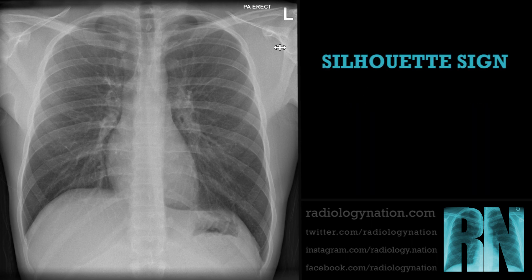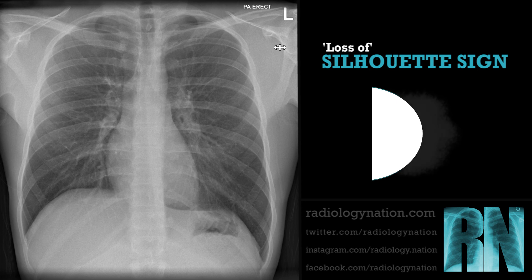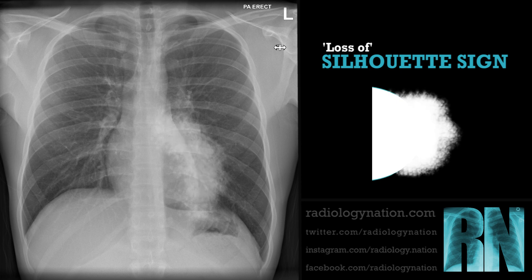When trying to determine which lobe the consolidation is in, we use the silhouette sign, or more appropriately, the loss of silhouette sign. We can see the mediastinal contour in a normal chest radiograph because the dense mediastinum lies against aerated lungs — it is the junction between air and soft tissue that makes the contour visible. When a material with a similar density to the mediastinum occupies the space next to it, the normal silhouette is lost. This is the basis of the loss of silhouette sign.